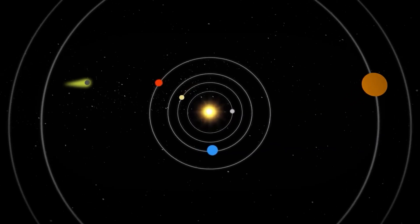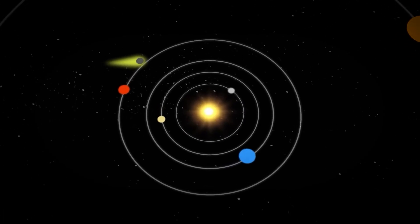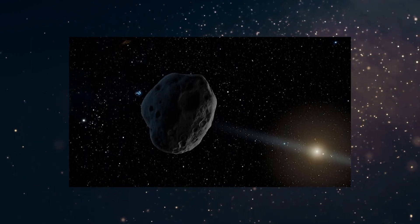Because when we check the images after its close approach to the sun, the object is still intact. How do you accelerate without losing mass? You don't. Unless you have engines.